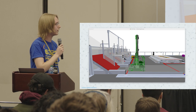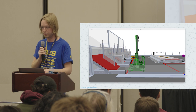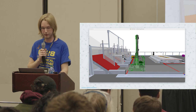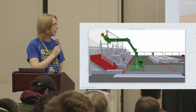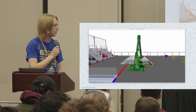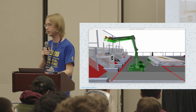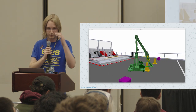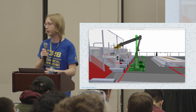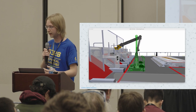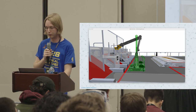Let's switch to my favorite AdvantageScope view: the 3D field. AdvantageScope has a feature that allows you to import your robot CAD for visualization. Here we're looking at the exact same data projected onto the real robot model, so we can see how the real robot is moving relative to the setpoint. This makes it much easier to visualize everything that's going on. AdvantageScope can also connect over NetworkTables, so during driver practice we could see this same visualization live.